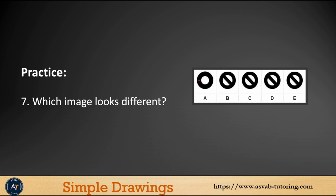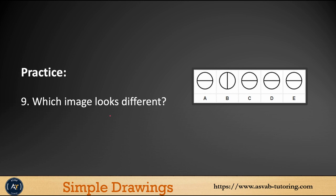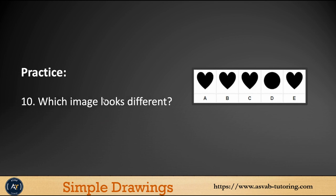Question number seven — all of them look like circles intersected inside, but all are the same orientation except one, so find the correct answer. Question eight — all look like a rectangle with a left arrow, but one of them is different. Question nine — try by yourself and see which image looks different. The last one, number ten — all of them are hearts except one that is not a heart, so find the answer.